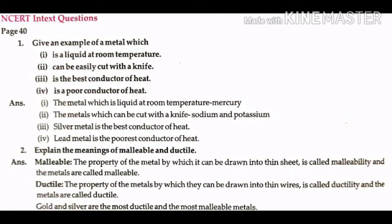In-text questions, page number 40. Question 1: Give an example of a metal which: (1) is a liquid at room temperature, (2) can be easily cut with a knife, (3) is the best conductor of heat, (4) is a poor conductor of heat. Answers: (1) Mercury is the metal which is liquid at room temperature. (2) Sodium and potassium are metals that can be cut with a knife. (3) Silver is the best conductor of heat. (4) Lead is the poorest conductor of heat.